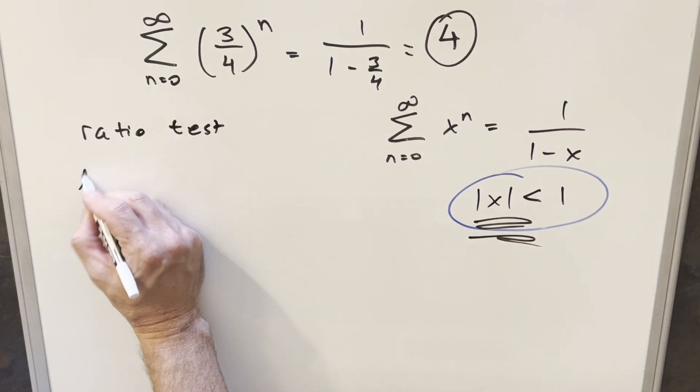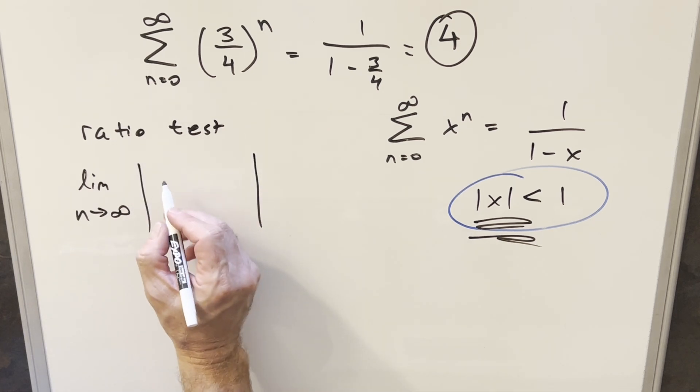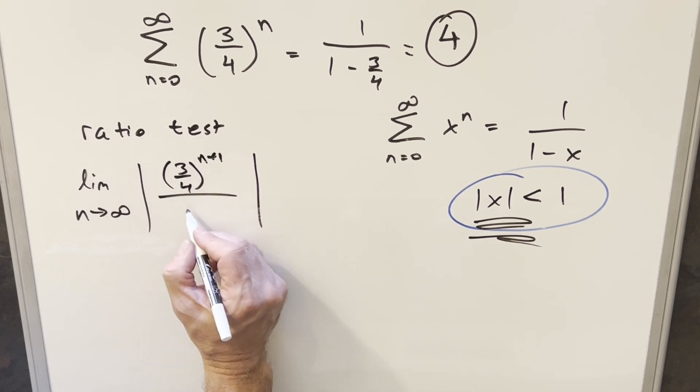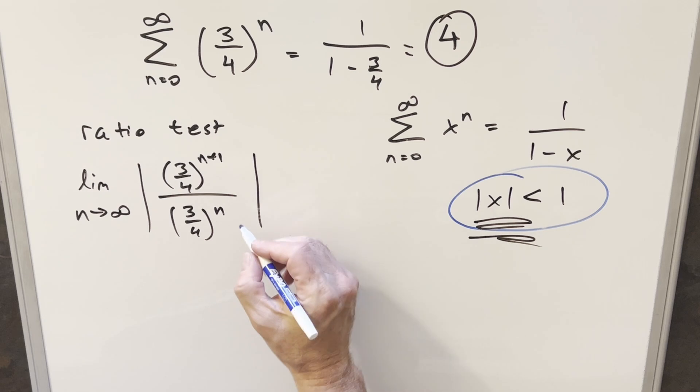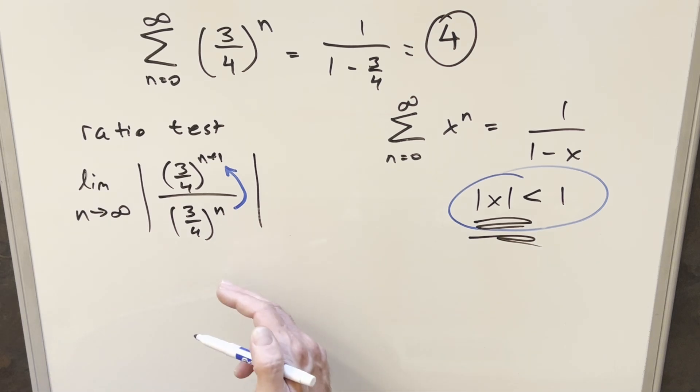Next, we'll look at the ratio test for this. Again, we're looking at the limit as n goes to infinity, and we want absolute value on this. What we're going to be comparing is 3 fourths to the n plus 1 over 3 fourths to the n. A good way to think about this is at infinity, it's like we added one more term on the end of our infinity. The question is, when we do this, is it still going to be increasing, decreasing, or staying the same? Working this out, I'm going to drop the absolute value because everything's always going to be positive with a positive base.